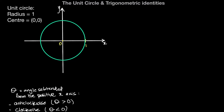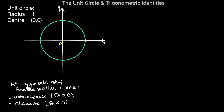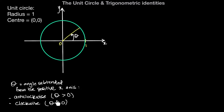The angle theta can be defined as the angle subtended from the positive x-axis. If we take the radius from the positive x-axis and subtend it by an angle of theta, this angle is positive if subtended in the counterclockwise direction. Had we gone in the clockwise direction, theta would have a negative value.